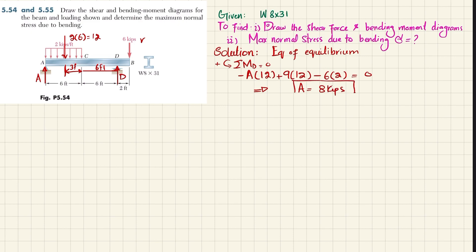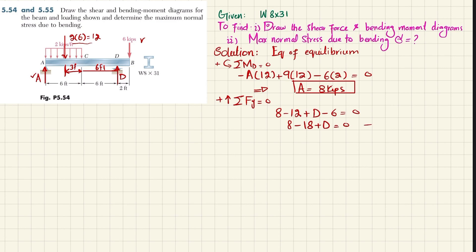Now with A = 8 kips, we find D using the force equilibrium: sum of all forces in the Y-direction equals zero. Taking upward forces as positive: 8 − 12 − 12 + D − 6 = 0, which simplifies to 8 − 18 + D = 0, giving D = 10 kips.